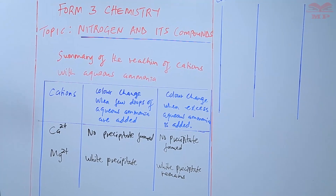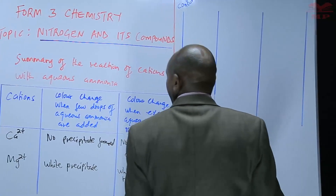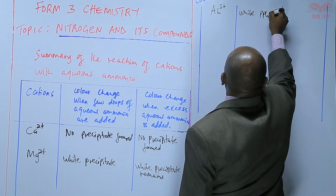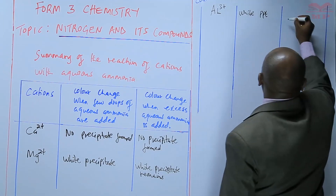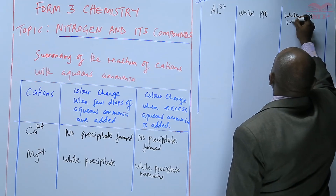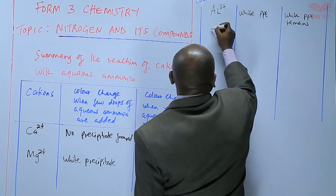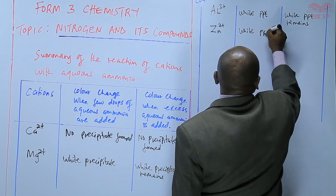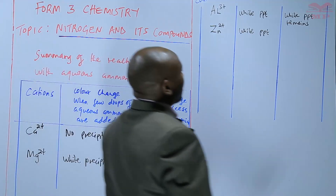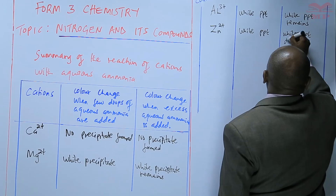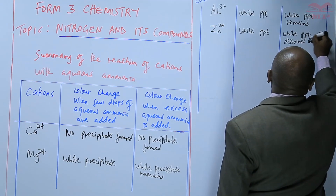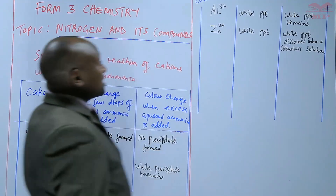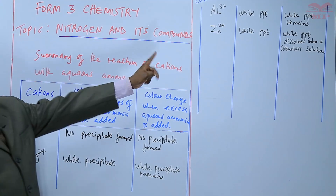Continuing further from magnesium ions, we go to aluminium ions. Then zinc ions, which also form a white precipitate. But when you add excess aqueous ammonia, the white precipitate dissolves into a colorless solution. So zinc ions form a white precipitate with aqueous ammonia, but that precipitate dissolves.